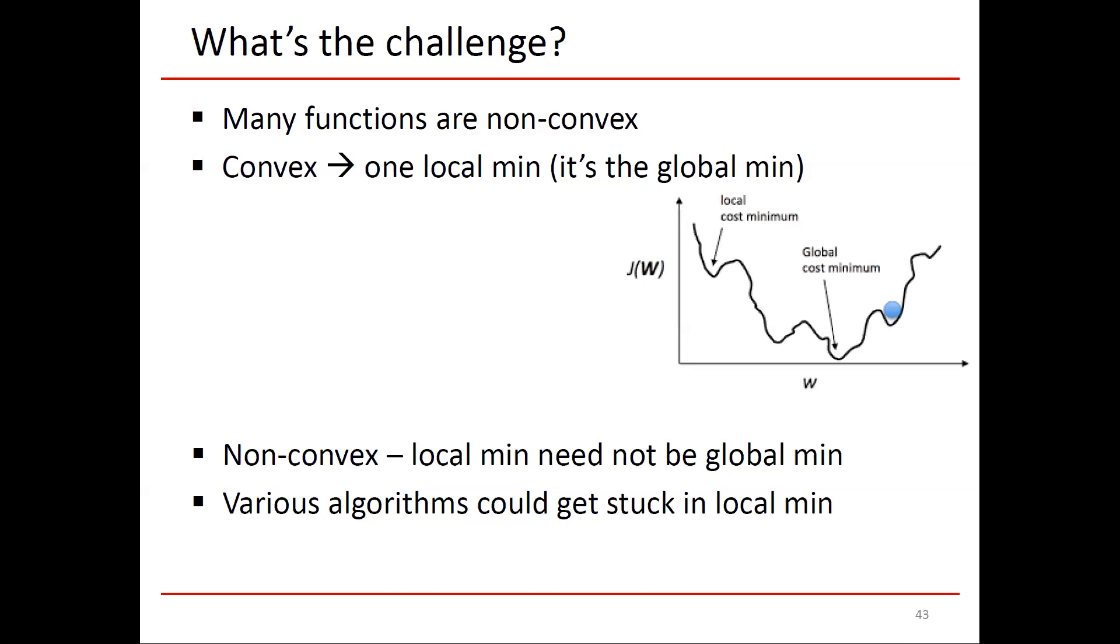Imagine your solution is this blue ball bouncing around, and it can get stuck in a local minimum. If it gets into the global minimum, it'll probably stay there, but a local minimum is problematic. The problem with non-convex optimization is that a local minimum need not be the global one, and various algorithms could get stuck in a local minimum.